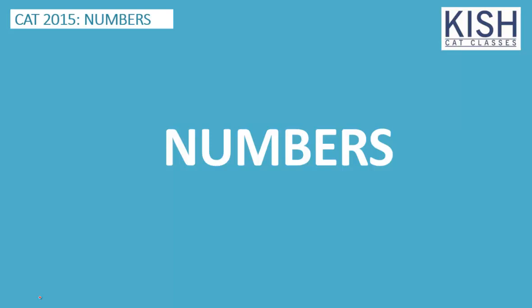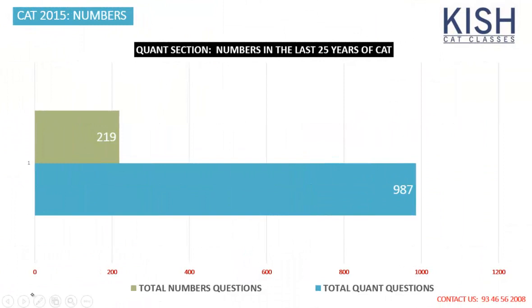Since it's a familiar topic, you should know what types of questions and concepts are tested in CAT, rather than trying to solve everything. We should also know the weightage of Numbers. In the last 25 years of CAT — from 1990 to 2014 — out of 987 quantitative ability questions, 219 are numbers-based questions. Combined with numbers-related topics, that's almost 22% of quant, making it a very big chapter.